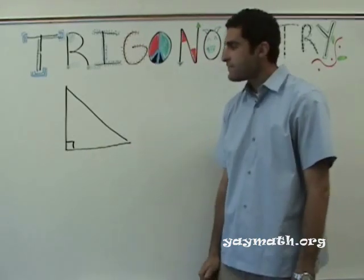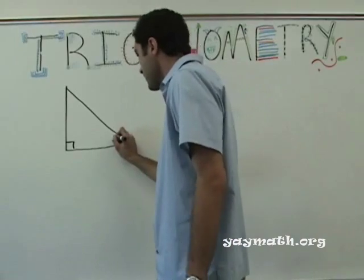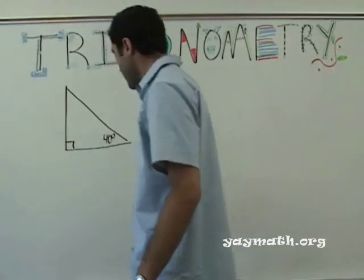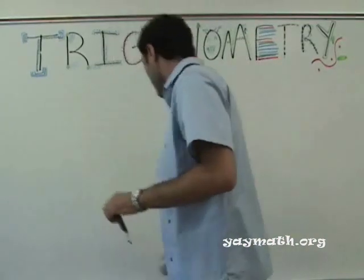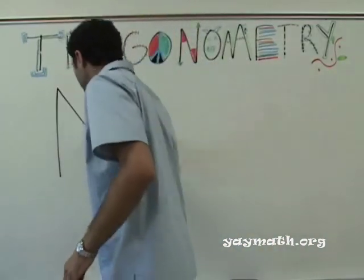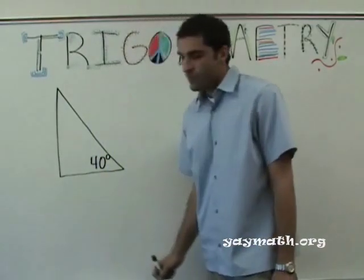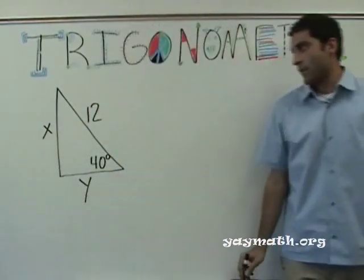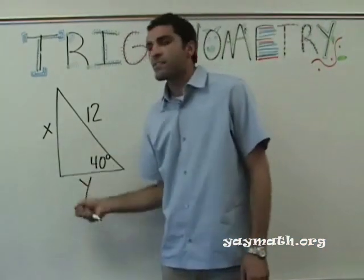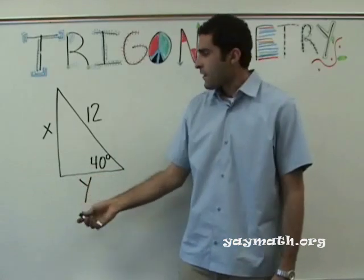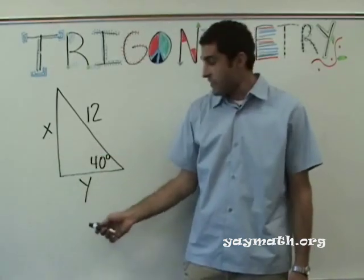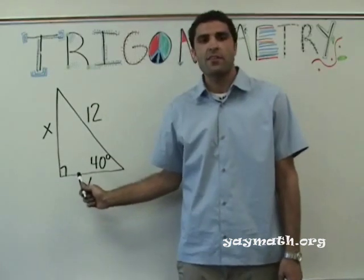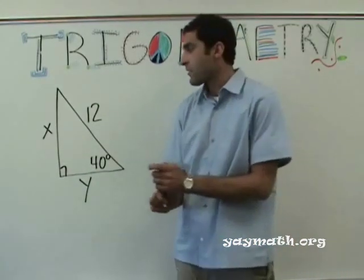This is the right triangle, as you can tell, and we are going to create some angle relationships. Let's make some examples here. Let's make this 40 degrees, and we'll make this 12, x, y. Normally if you're trying to solve for x or y, you would use the Pythagorean theorem because you would be given x or y. This is a right triangle. So if you're given x, for example, you can solve for y using Pythagorean theorem. Now we're going to use trigonometry because we don't have enough sides.